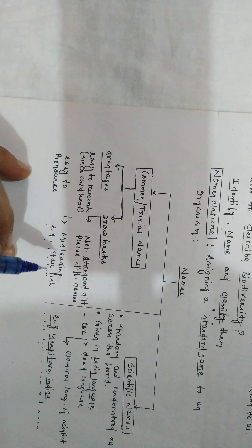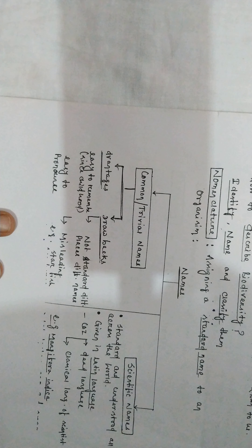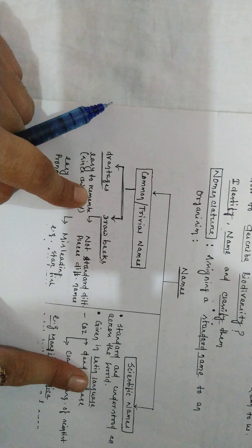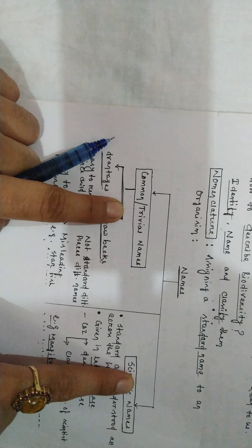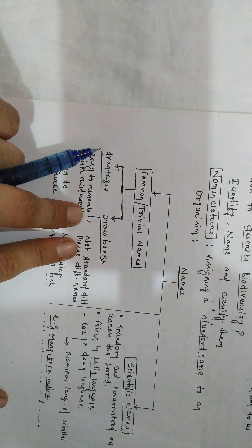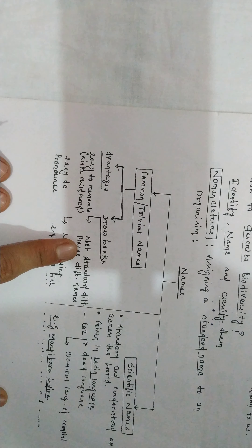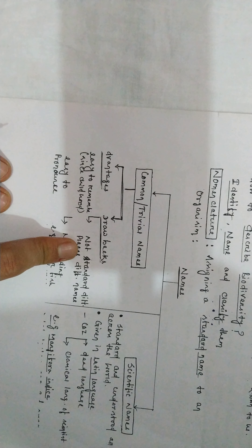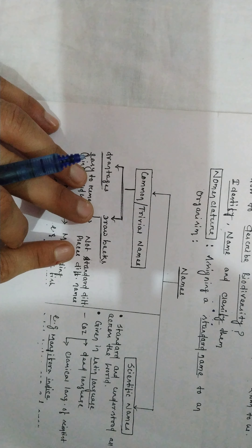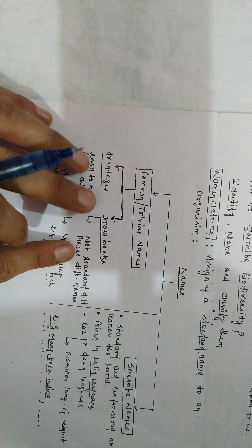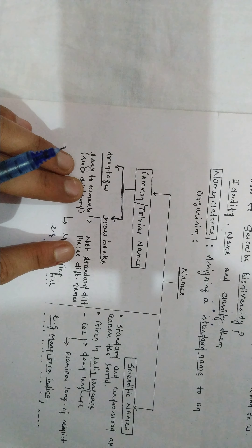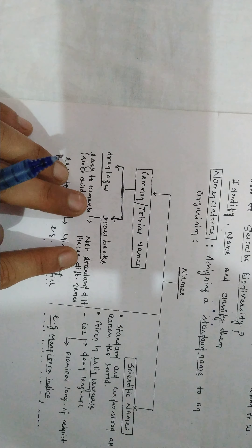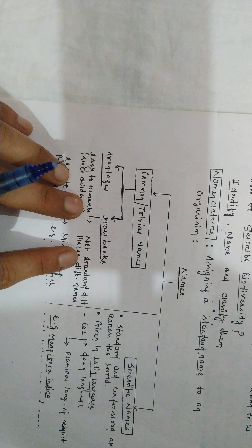Nomenclature of an organism is done in two ways: one is the common name and another is the scientific name. The common name is the name used by individuals in a local area. There are no scientific formulas or theories applied to these local names — they are used for people's ease.